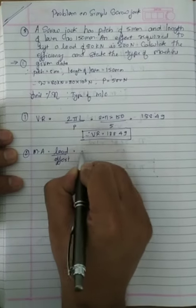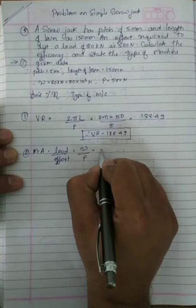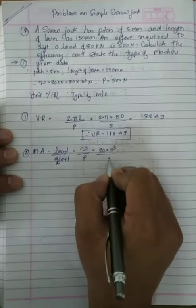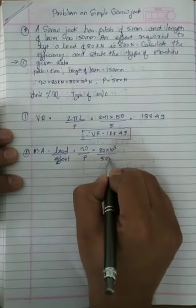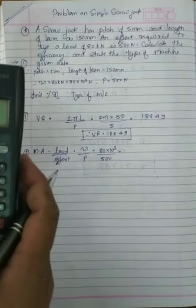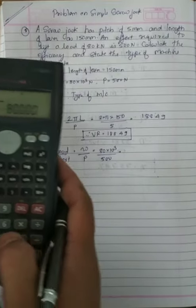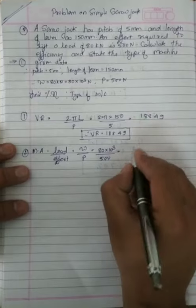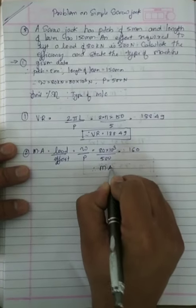Load upon effort. So load is equal to W upon P. W is 80 kN, so we convert that to 80 into 10 raised to 3 upon P. P is effort, effort is 500. So calculate: 80 into 10 raised to 3 upon 500.